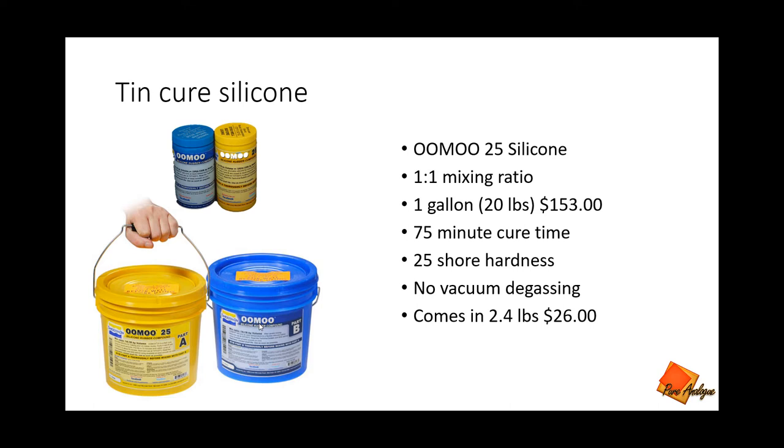You can buy the one gallon version for $153, which is still considerably lower than dental type silicones, or you could buy the 2.5 pound trial kit for $26, which is a real bargain, especially if you only do a couple of duplications a month. There's no vacuum degassing and it has a 25 shore hardness. I've done 15 duplications with one mold in this material without any problem.